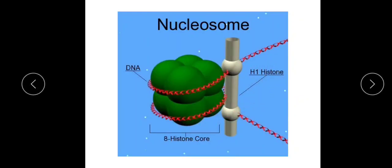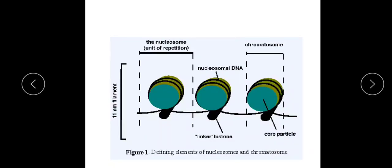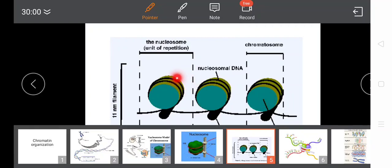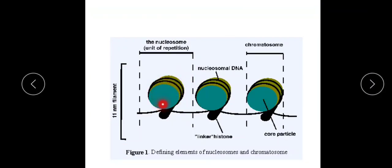Here is an expanded view. Each histone core with its wound DNA repeats — each one is called a nucleosome. The nucleosome is the fundamental repeating unit: one nucleosome, then a linker DNA string, then another nucleosome, and so on. Nucleosomes are the repeating units, and the H1 histone, which binds with the linker DNA, is also called the linker histone.